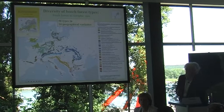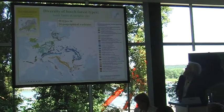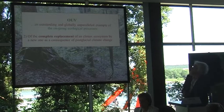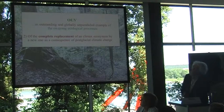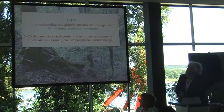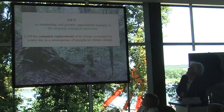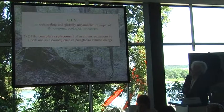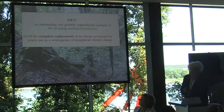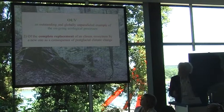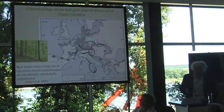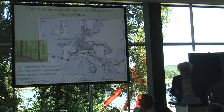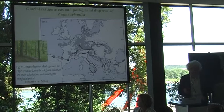They have a very diverse classification with many different types characterized by different phytogeographical groups. Here only the part on eutrophic sites shows nearly 60 different types across Europe. The second point is the complete replacement of a climax ecosystem by a new one as a consequence of postglacial climate change.